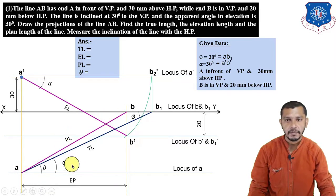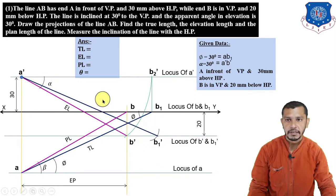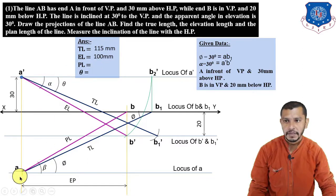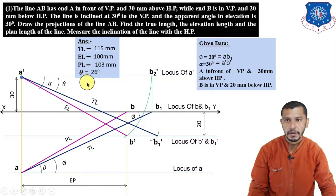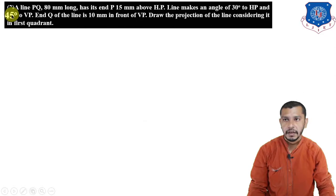Connect A and B to get the plan length, whose angle is β. Measure AB1 (true length), take center at A' and rotate onto the locus of B'; connect B1' to A' to get the true length line, whose angle is θ. Measuring: the true length AB1 equals 115 mm, the elevation length A'B' equals 100 mm, the plan length AB equals 103 mm, and the angle θ equals 26 degrees. These are the final answers for Problem 1.